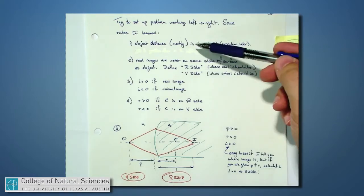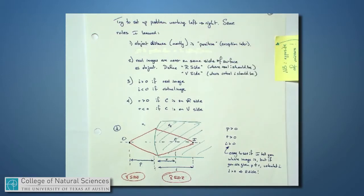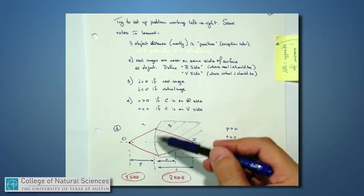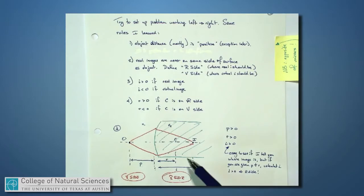So, first rule for how we will handle this sign convention is that p, the object distance, is a positive number. Second rule is the real side is over on the right. Virtual side is over on the left. No matter what kind of surface we're talking about here for this refracting surface, this is the real side.